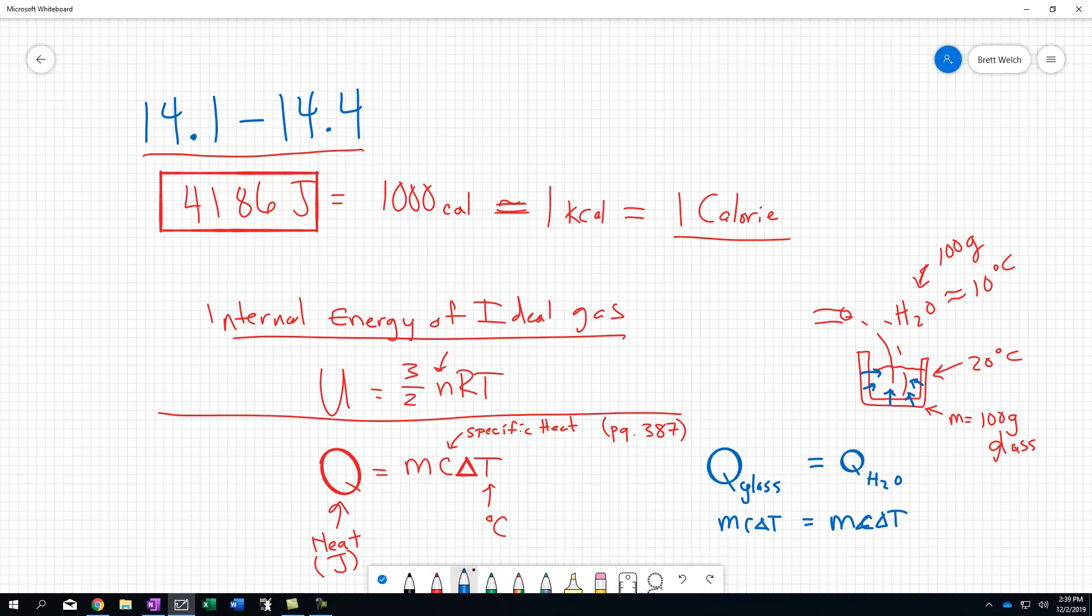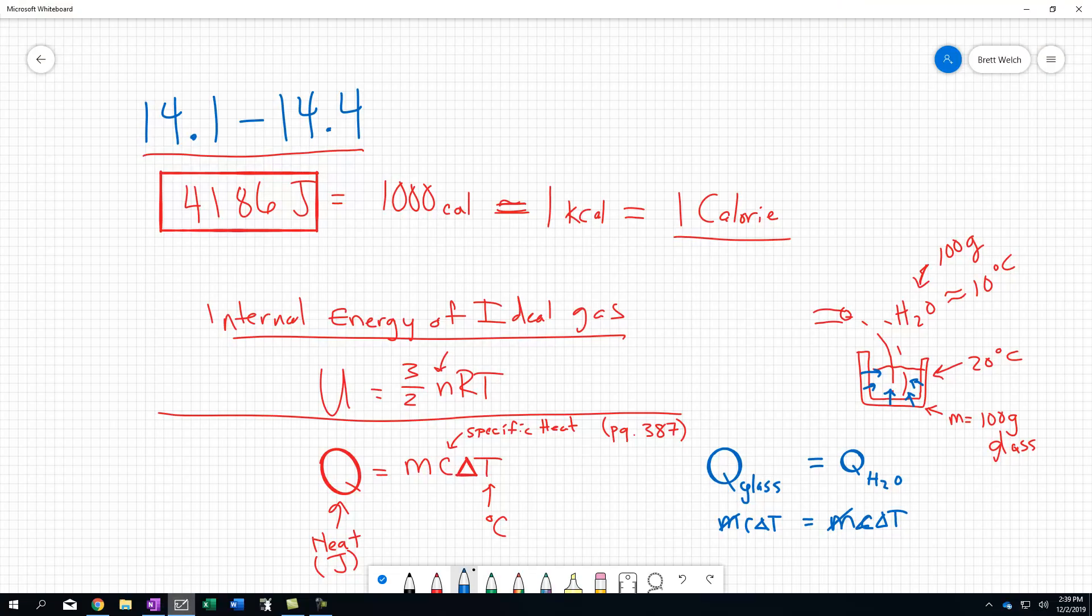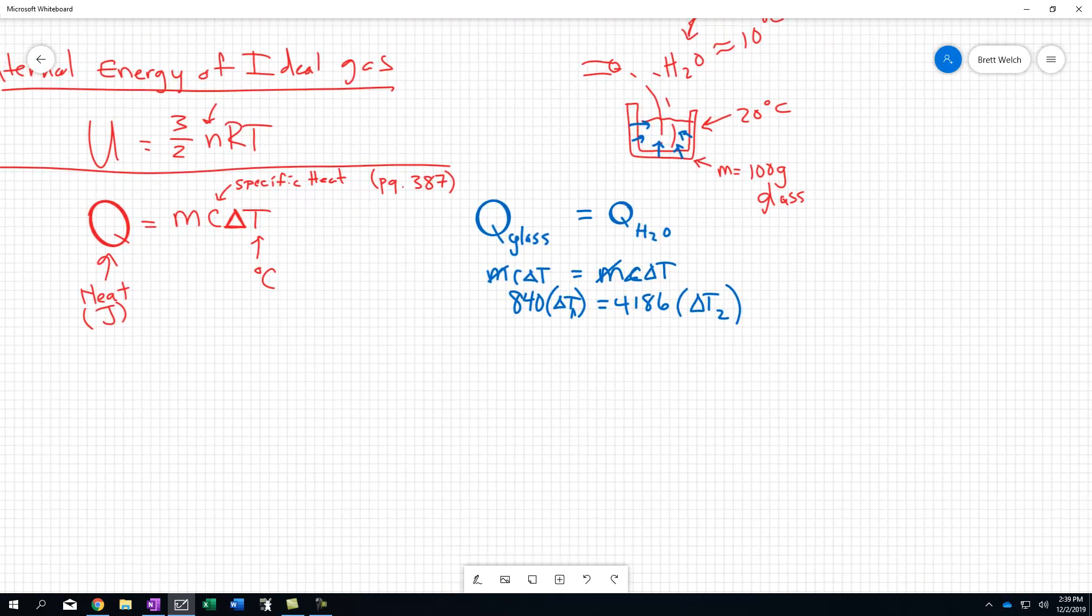We're going to notice that the MC delta T would have to equal MC delta T for our water and our glass. They both have the same mass of 100, so I get to cancel them. I go to page 387 looking for some values. I notice that water is 4186, and glass is 840. I've got 840 times delta T equals 4186 times delta T2. We have to realize that they're not going to both experience the same temperature change.